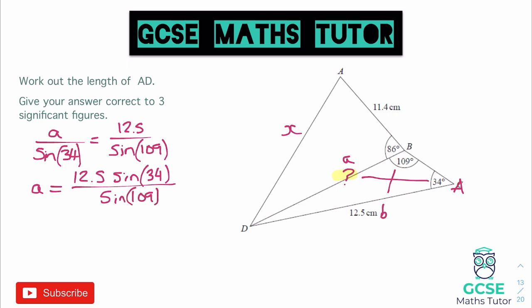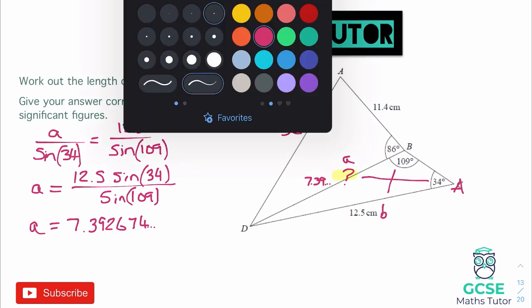If we type that into our calculator using the fraction button, we get a equals 7.3926...— I'll go to seven significant figures: 7.392674. It says three significant figures so I kept more decimals for accuracy. Let's label that on the diagram — this length here is that 7.39 number. Now I can move on to the triangle above.